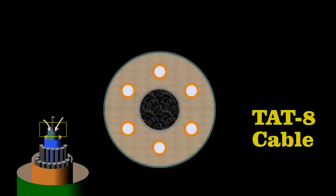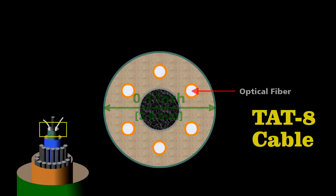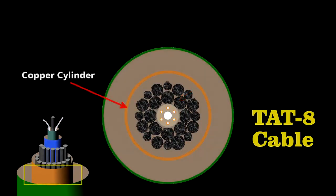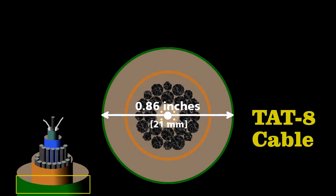Engineers designed the cable carefully to survive on the ocean floor. At its center lies the core. Less than a tenth of an inch in diameter, it contains six optical fibers wrapped around a central steel wire. They embedded this in an elastomer to cushion the fibers, surround it with steel strands, and then sealed it inside a copper cylinder to protect it from water. The final cable was less than an inch in diameter, yet it could handle some 40,000 simultaneous phone calls.